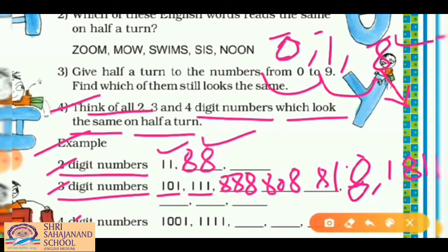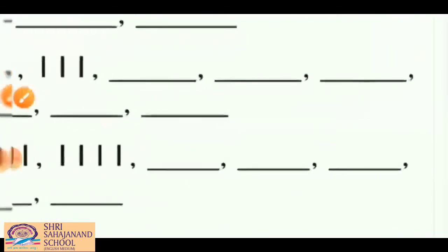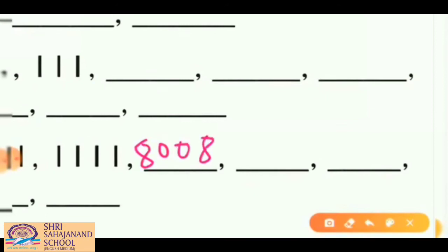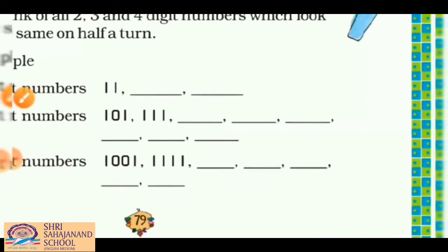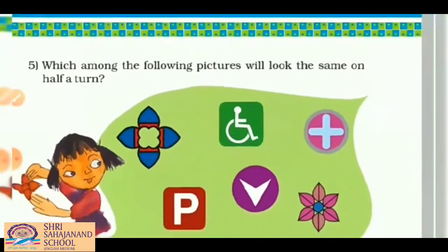For four-digit numbers that look the same on a half turn, the examples are: 1001, 1111, 8008, 8888, 8118, and 1881. These are all the numbers using digits 0, 1, and 8 that look the same after a half turn.